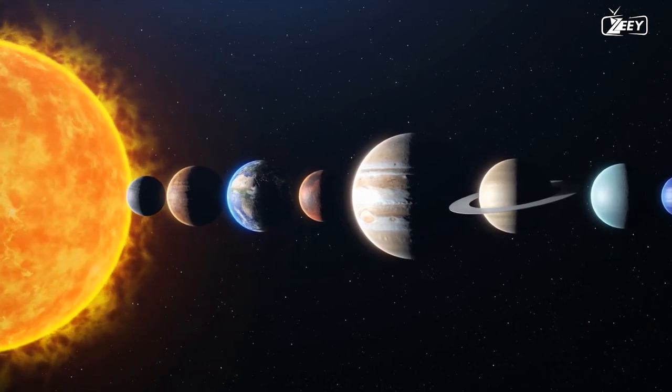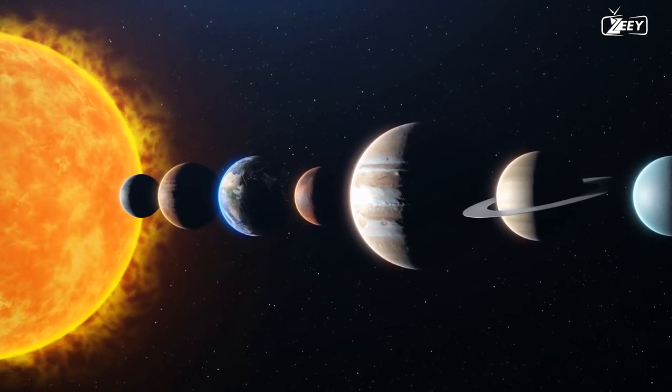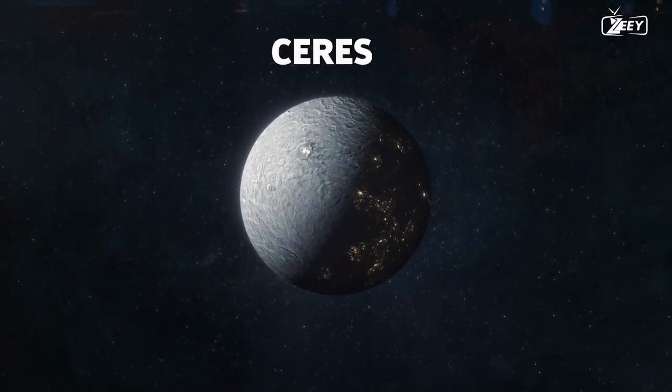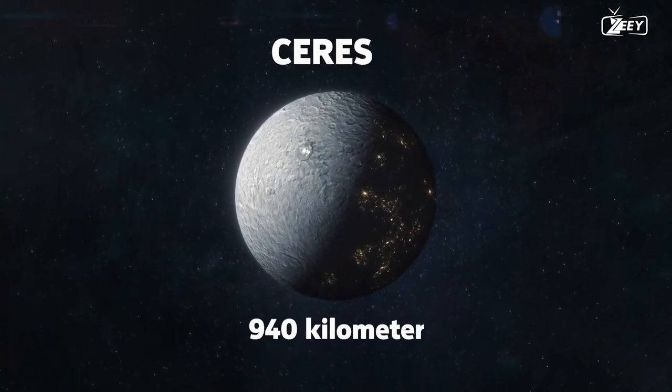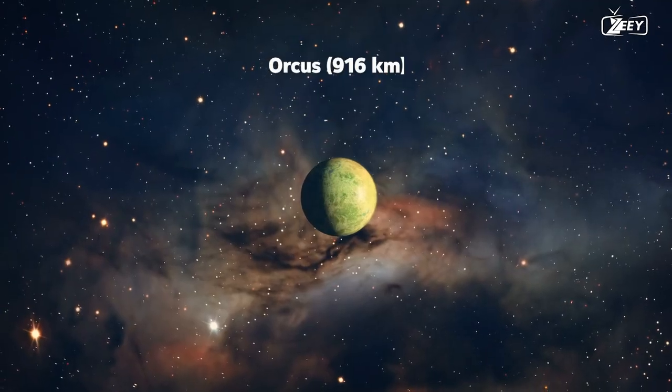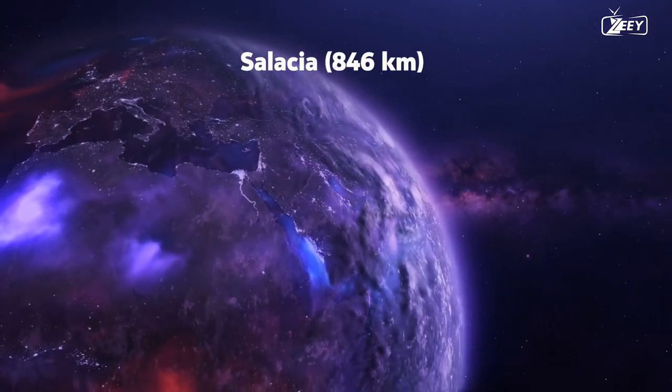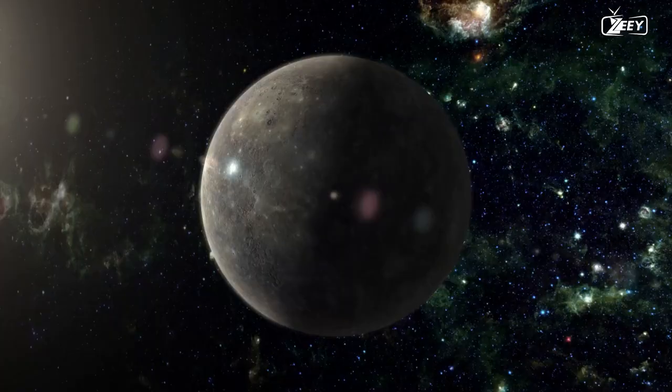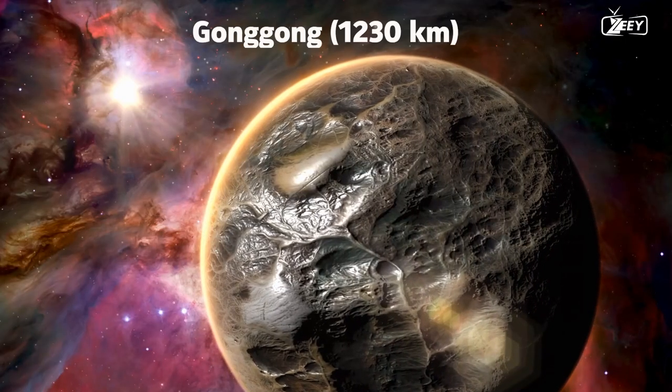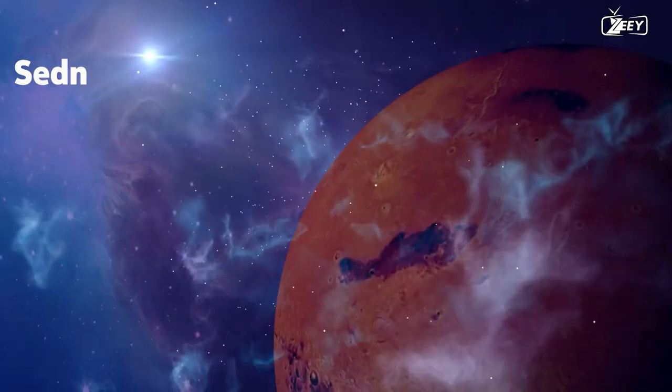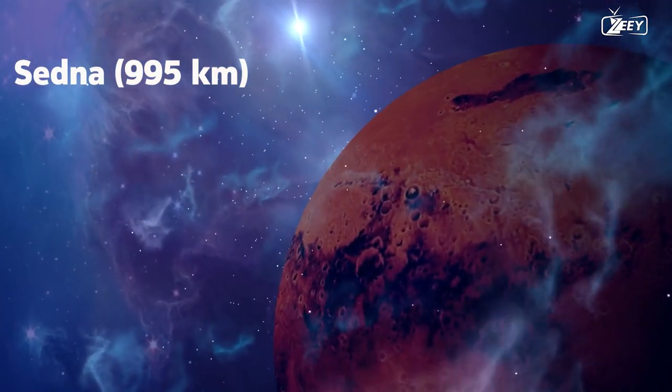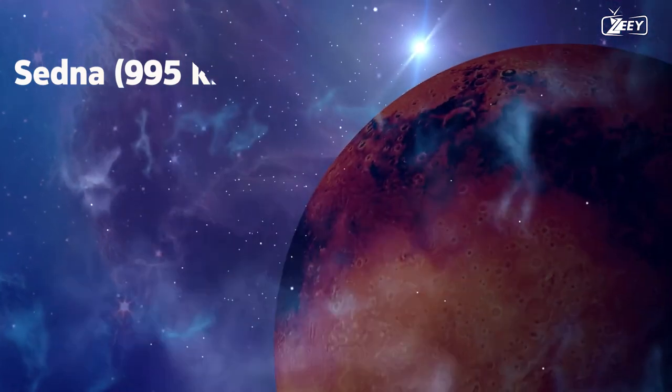However, do you know what the smallest spherical object in the solar system is that is in hydrostatic equilibrium? Ceres, the dwarf planet, has a diameter of 940 kilometers and is the largest asteroid. Orcus, 916 kilometers; Salacia, 846 kilometers; Quaoar, 1,120 kilometers; Gonggong, 1,230 kilometers; and Sedna, 995 kilometers, appear to be other spherical objects of this size in hydrostatic equilibrium.